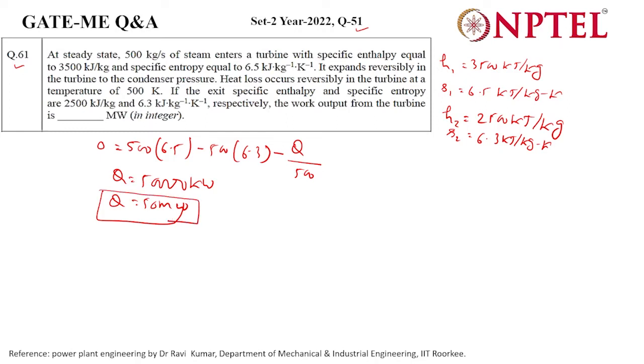How much turbine will do work? W net would be m dot times h1 minus h2 minus Q. So m dot is 500, h1 is 3500, and h2 is 2500, m dot is 500, minus 50,000. When we calculate, it will become 450,000 kilowatt. It will convert to megawatt, it will become 450 megawatt.